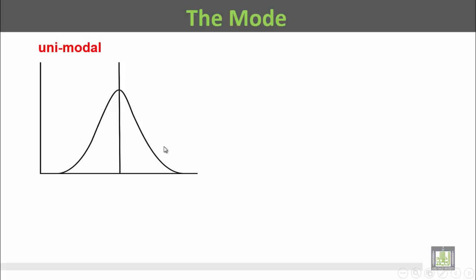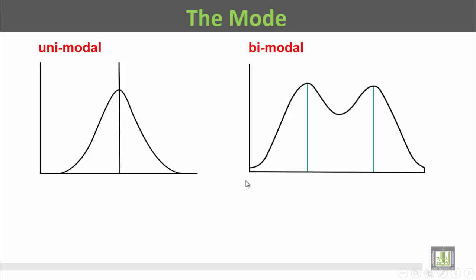This curve describes a unimodal distribution. Actually this is the normal distribution curve while this curve describes bimodal.